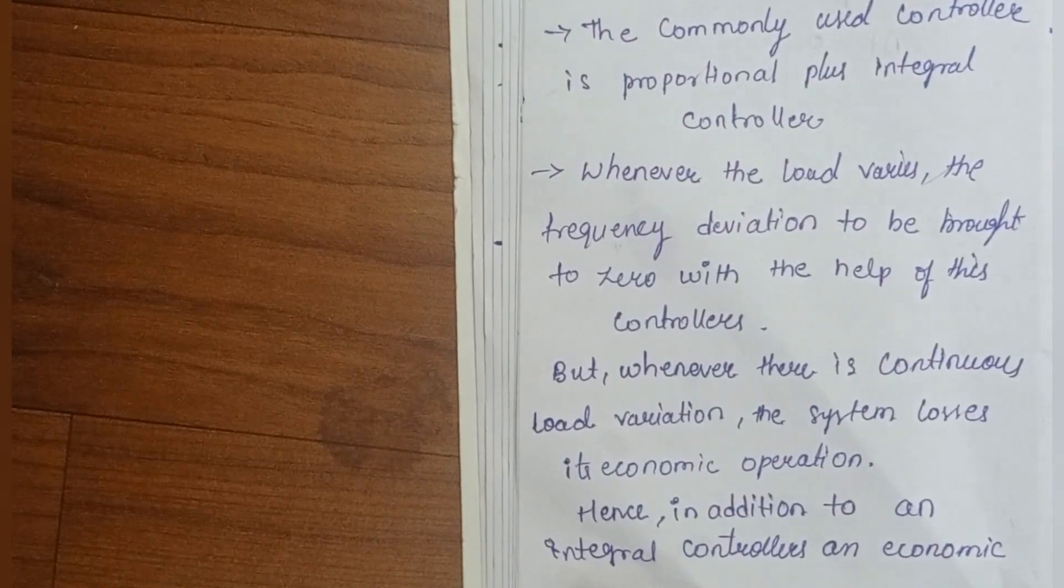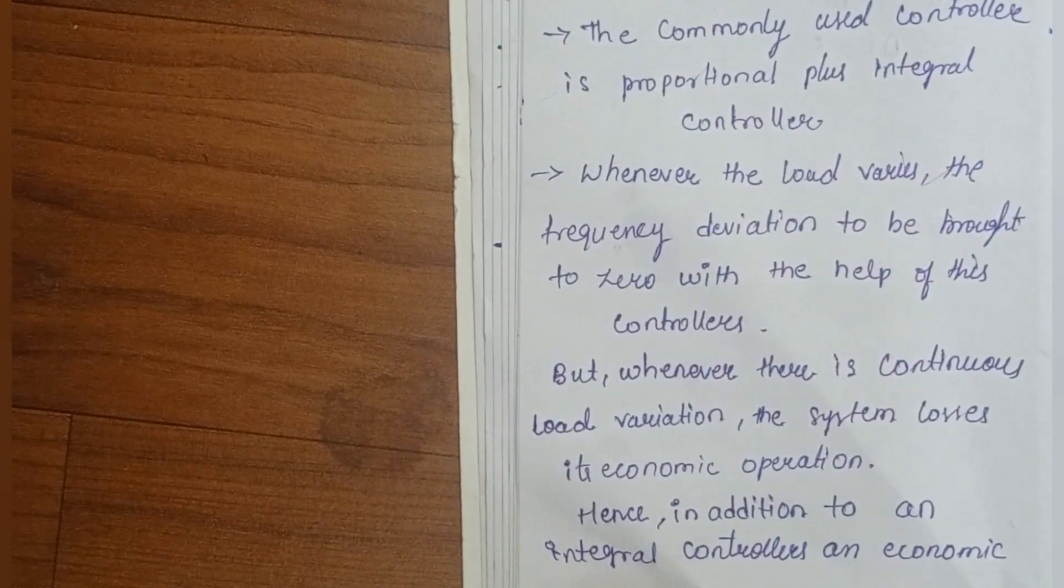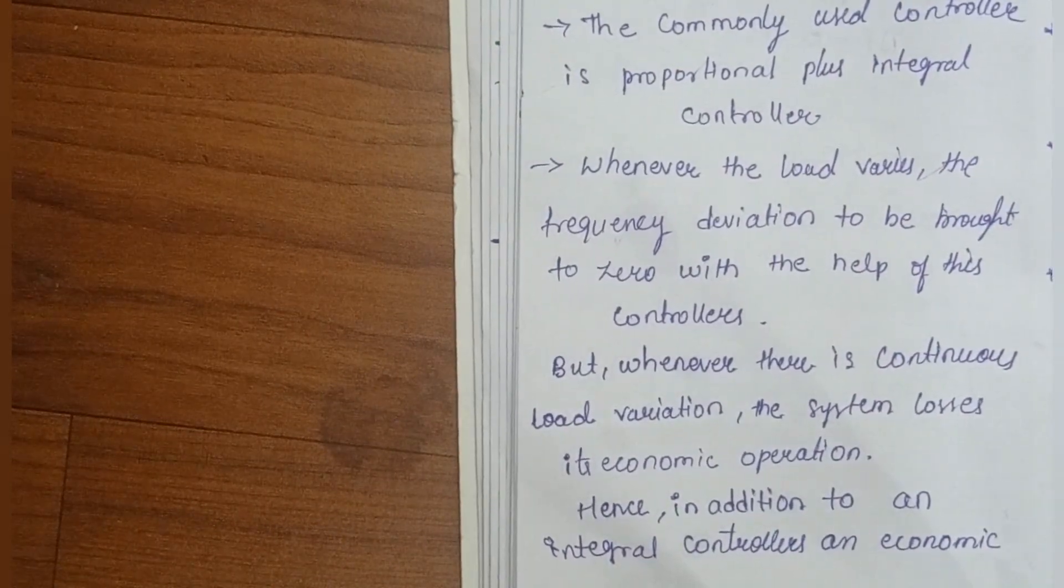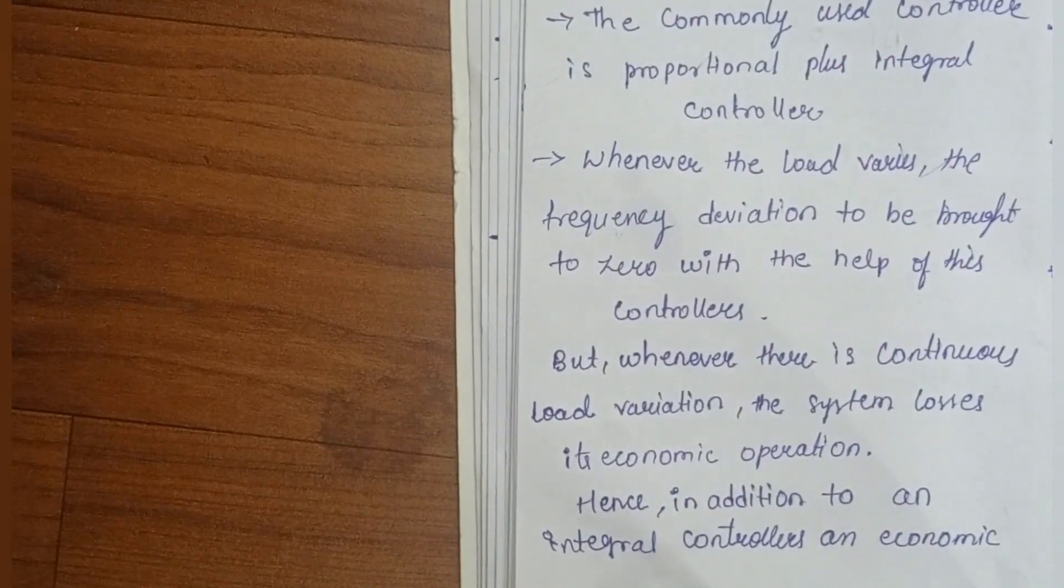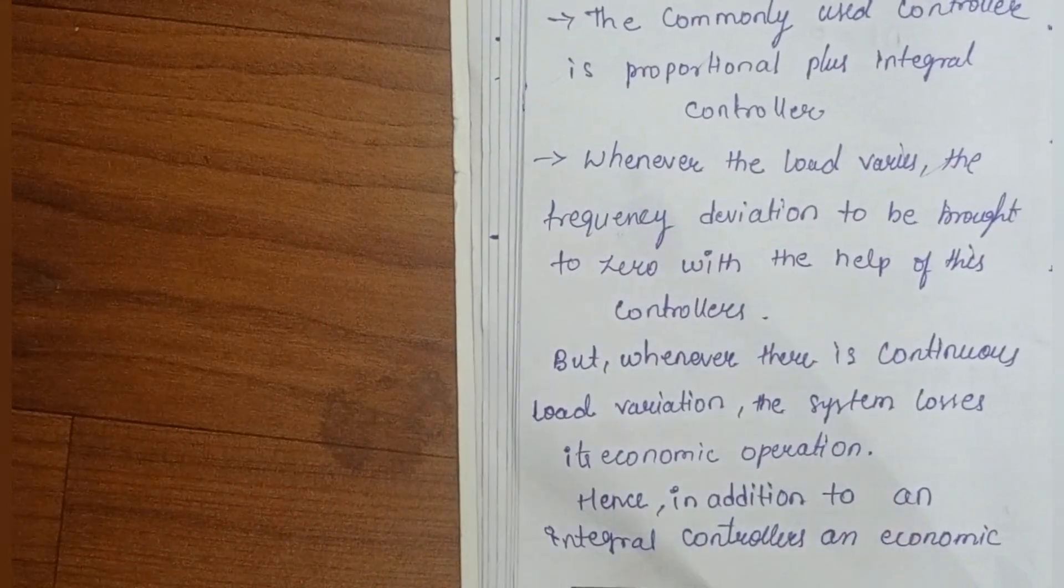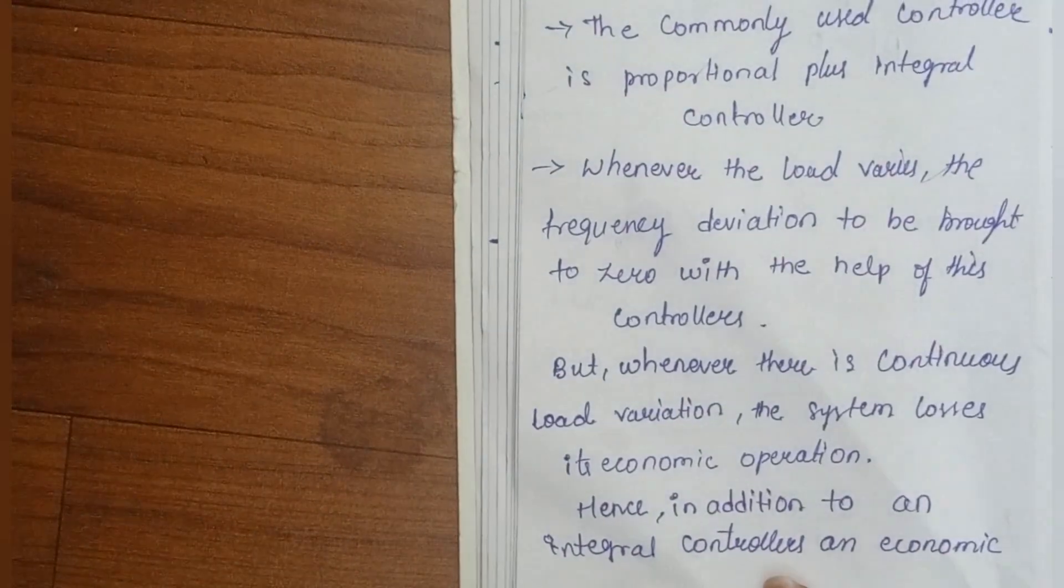The load variation will continue. When the system is operating, there are losses in the system. In addition to the proportional controller, an integral controller is needed. We have continuous operation.